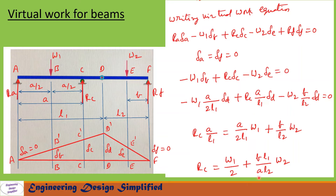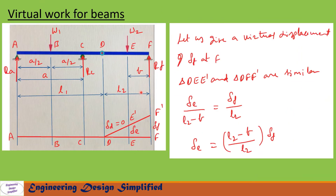Now to find reaction at F (Rf), let us give a virtual displacement of delta_F at F. The beams assume position ABC-D-E'F'. We have two similar triangles: DE-E' and DF-F'. Here displacement is delta_F at F, delta_E at E, and delta_D equals zero. From these two similar triangles: delta_E / (L2 - b) = delta_F / L2, so delta_E = ((L2 - b) / L2) * delta_F.